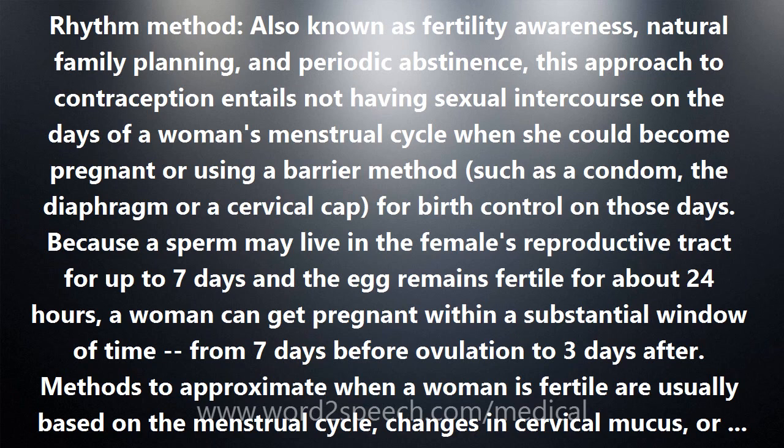This approach to contraception entails not having sexual intercourse on the days of a woman's menstrual cycle when she could become pregnant, or using a barrier method such as a condom, the diaphragm, or a cervical cap for birth control on those days. Because a sperm may live in the female's reproductive tract for up to 7 days